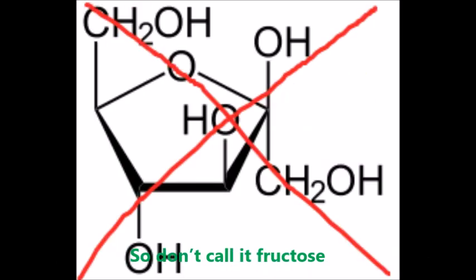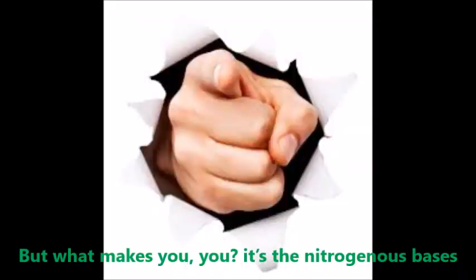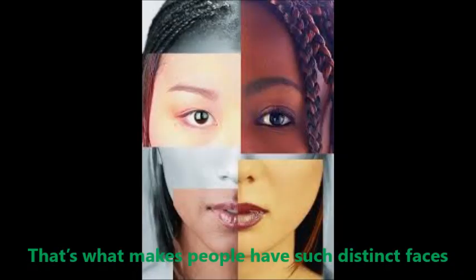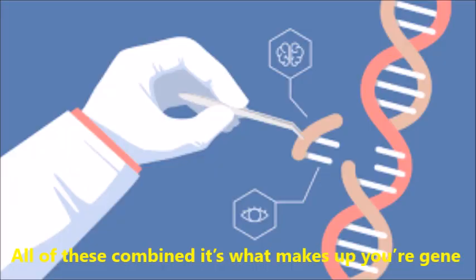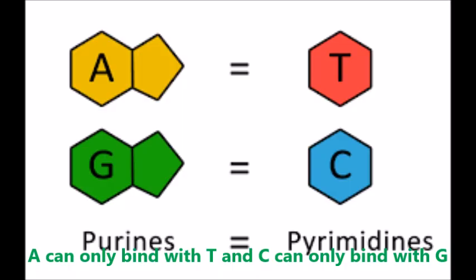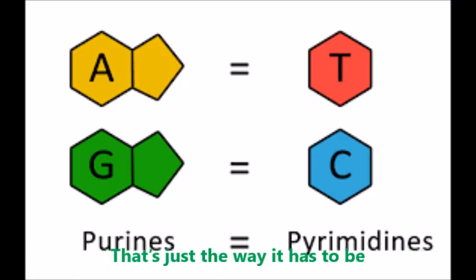What makes you you is the nitrogenous bases - what makes people have such distinct faces. Adenine, thymine, cytosine, guanine - all these combined are what make you unique. A can only bind with T, and C can only bind with G. That's just the way it has to be, because they're base pairs. Hydrogen bonded, A and T have two, while C and G have three.